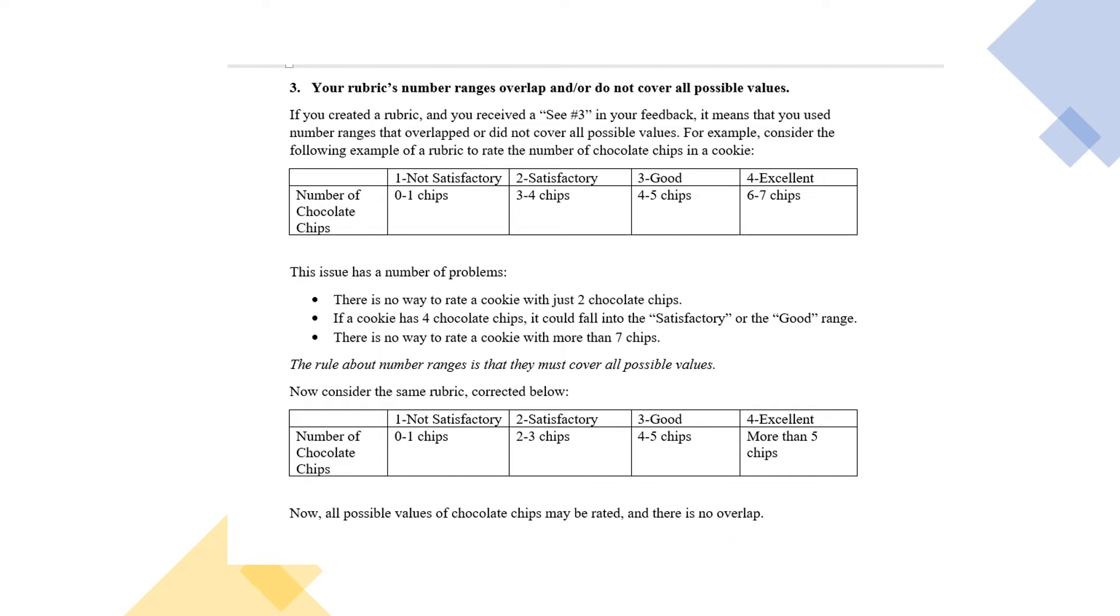In the top example we have non-satisfactory zero to one chips, satisfactory three to four chips, good four to five chips, excellent six to seven chips. You might notice that certain numbers are left out or not covered in these ranges or overlap.